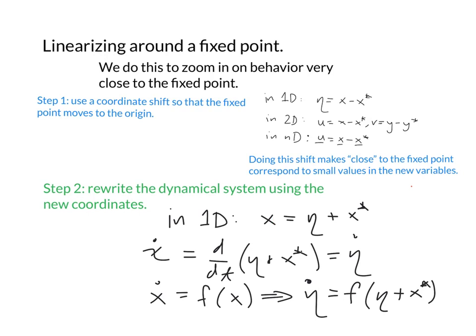So η was equal to x minus x*, that means x equals η plus x*. If my old system was ẋ = f(x), I have to figure out what ẋ becomes in my new coordinates. So ẋ actually becomes η̇, because x* was a constant and its derivative is zero. And f(x) becomes f(η + x*), so my new system is η̇ = f(η + x*).